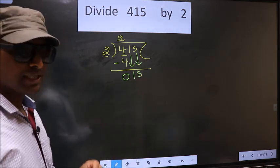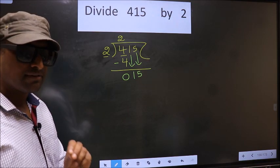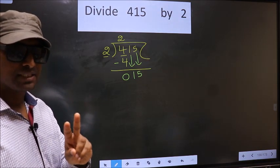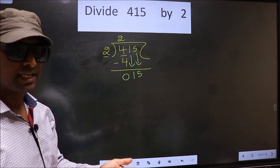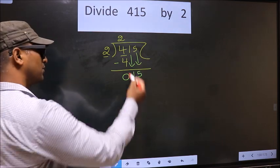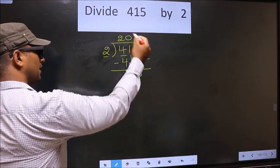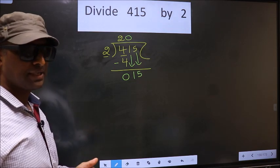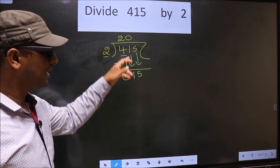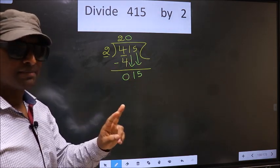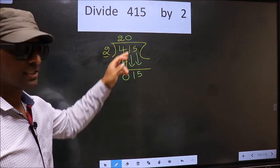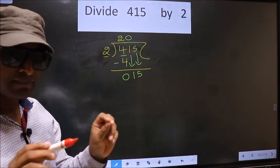Here you should remember this: whenever you are bringing down 2 numbers, you must put 0 in the quotient. I repeat: whenever you are bringing down 2 numbers, you must put 0 in the quotient. Remember this point.